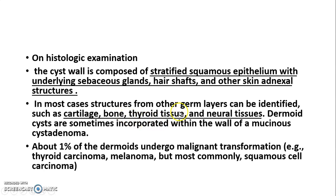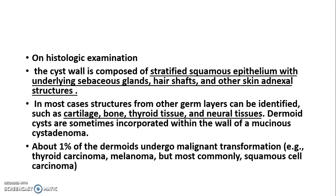You can also see thyroid tissue and neural tissue. Dermoid cysts are sometimes incorporated within the wall of a mucinous cystadenoma. About 1% of dermoid cysts undergo malignant transformation, including thyroid carcinoma, melanoma, and squamous cell carcinoma.